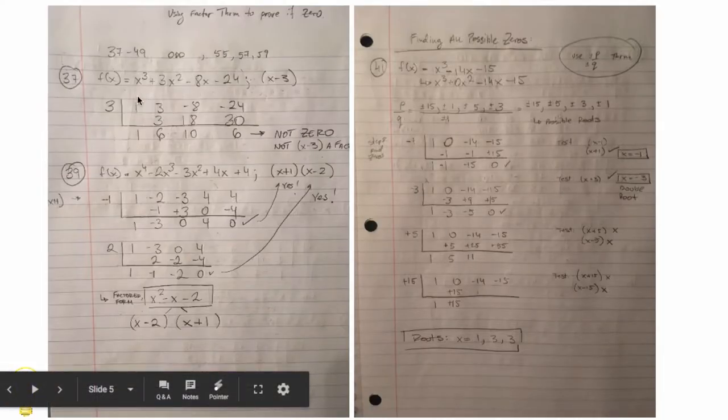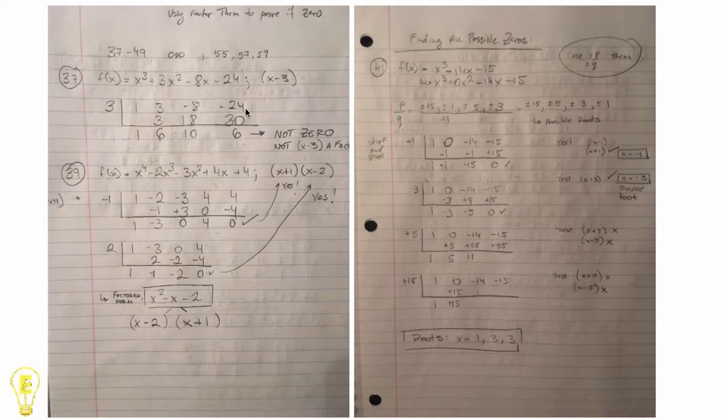So here's 37, synthetic division again. So the 3 goes on the outside. We put our coefficients on the inside. And then because I didn't get a 0 down here after I did the synthetic division, it's not a 0 of the polynomial, and that answers the question.